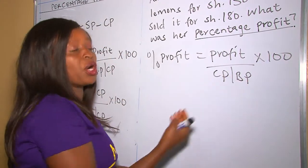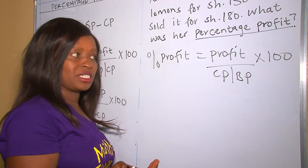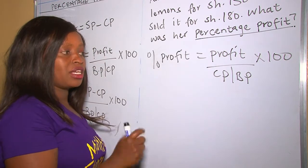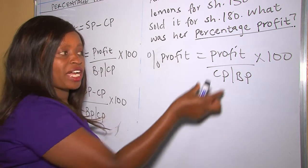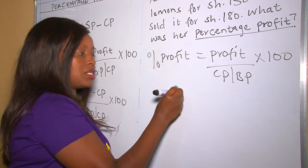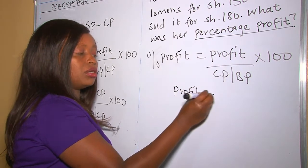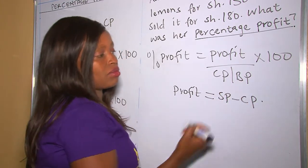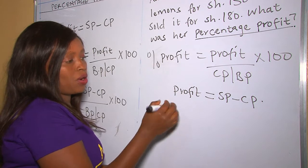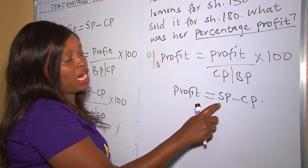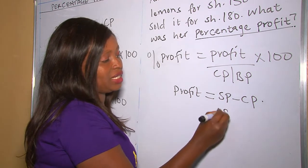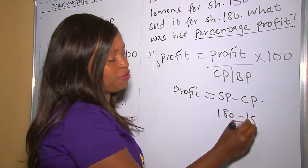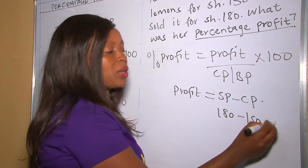If we apply this formula, we can get our percentage profit. But right now we don't have the profit, so we apply the formula for getting the profit. Profit equals selling price take away cost price. Our selling price is 180 and our cost price is 150, so when we take away, we get 30.